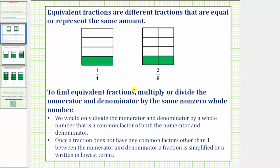To find equivalent fractions, we multiply or divide the numerator and denominator by the same non-zero whole number.